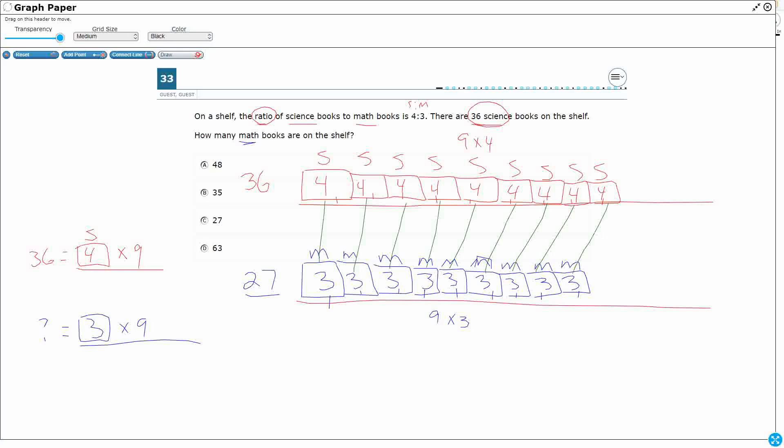We can say science to math. So 4 science is proportional to 3 math. And what I'm looking for is 36 science.